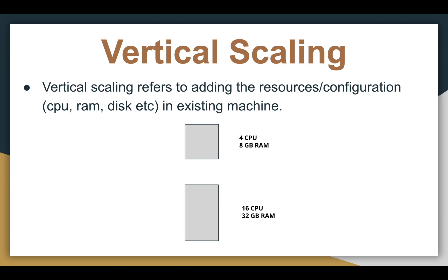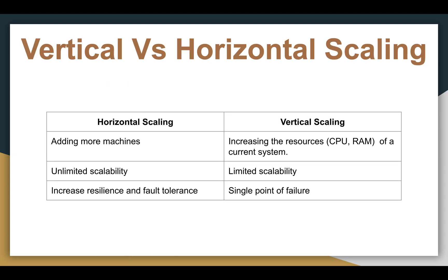Let's quickly recap. In horizontal scaling we are adding more machines to the system pool, whereas in vertical scaling we are increasing the resources of our current system. Horizontal scaling provides unlimited scalability — as traffic grows we keep adding more machines, so we can scale to a very large extent. But in vertical scaling, since we are upgrading to more powerful machines, there is an upper limit after which we can't add more cores and RAM to a single machine, so it provides limited scalability.